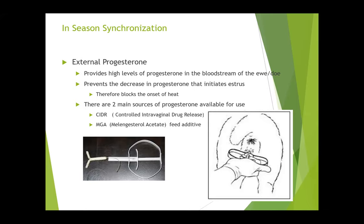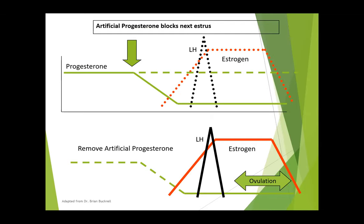With the CIDRs that we now have available — there's a picture of them here along with the applicator — they're super easy to put in and take out. They don't stick like the old sponges used to, for those of you who remember those, and they do a very good job of providing an external progesterone source. The CIDR is a plastic item with a rubbery skin impregnated with natural progesterone. They're inserted in the vagina and the progesterone is absorbed through the vaginal wall while the CIDR is inserted.